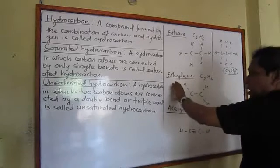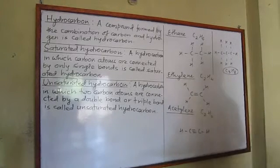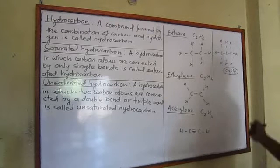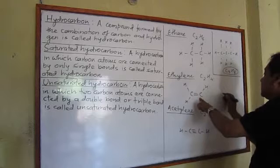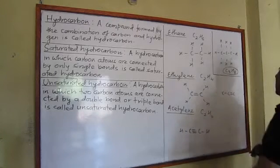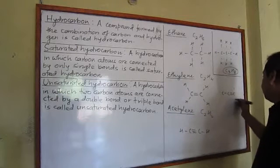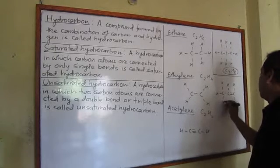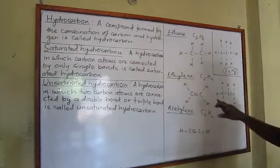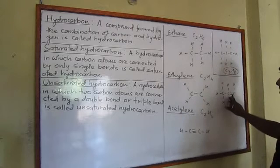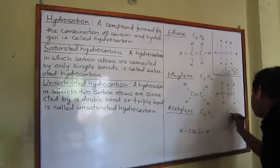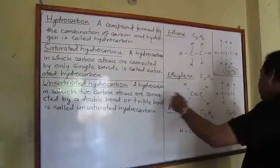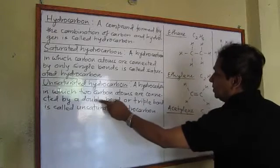For example, this is one unsaturated hydrocarbon where two carbon atoms are connected by means of a double bond, and this is another where two carbon atoms are connected by means of a triple bond. We may also have more than two carbon atoms. This is another unsaturated hydrocarbon in which carbon atoms are connected by means of a double bond, and its molecular formula is C₃H₆. This is called propene.